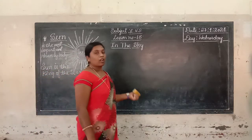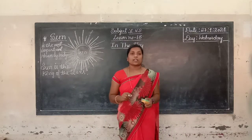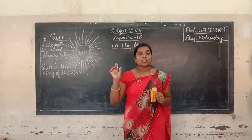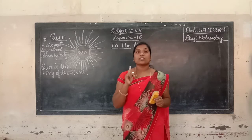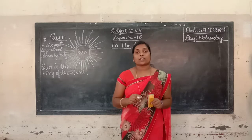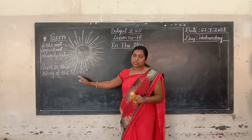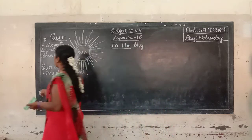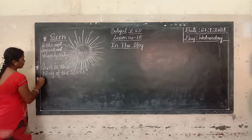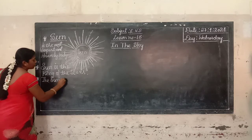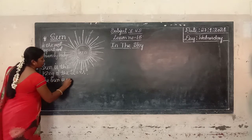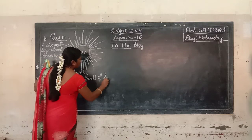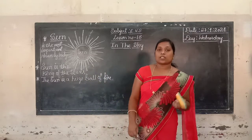It is a big huge ball of fire. So children, the sun is the most important heavenly body. When we look up in the sky in the daytime, we see the sun. The sun is a huge ball of fire.